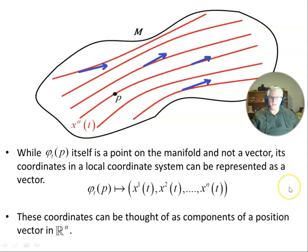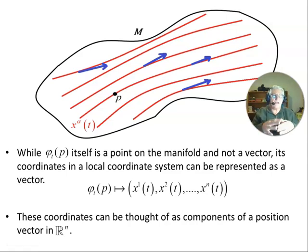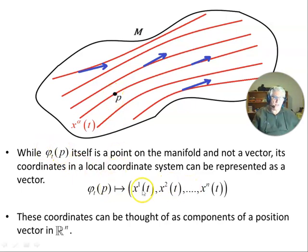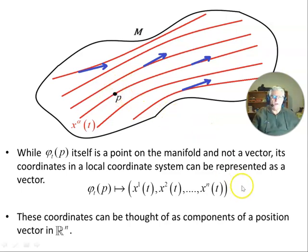While phi_t of P itself is a point on the manifold and not a vector, its coordinates in a local coordinate system can be represented as a vector. On the manifold, if it represents space-time, you could have a local inertial coordinate system set up at P — the tangent space at P — and you could regard phi_t of P as being some kind of a position vector in R^n, but only local to that point for a small enough volume of space-time where special relativity applies.